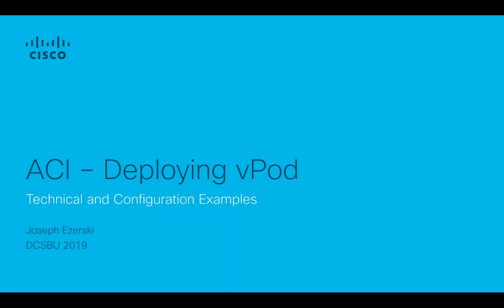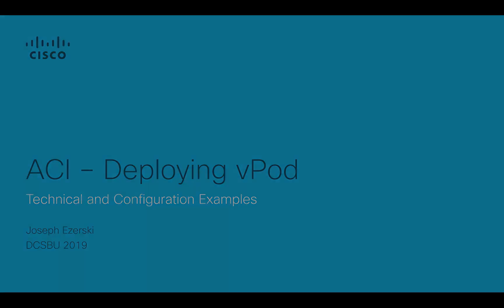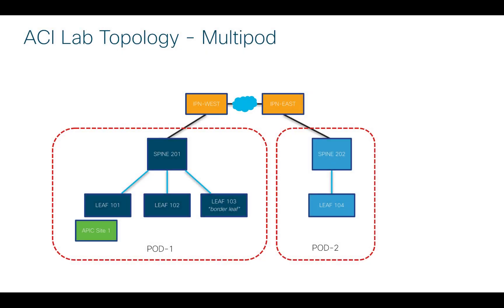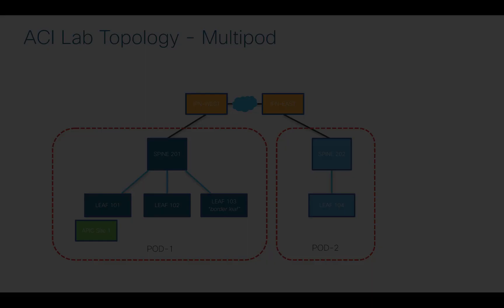In this series of videos, I'm going to talk about deploying a virtual pod, or vpod, on ACI. The first is just a really quick high-level overview of the topology in my particular lab. I've got two pods here in a multipod setup, and I've got IPN devices connecting them. This is a standard multipod setup, nothing exotic — we're not going to show that configuration, it's already running.